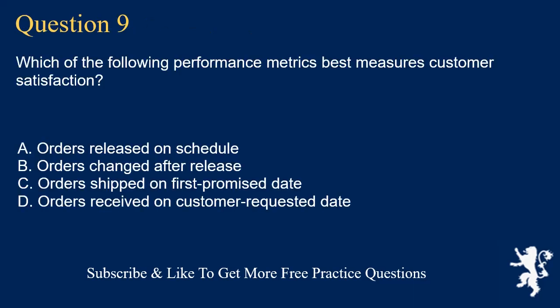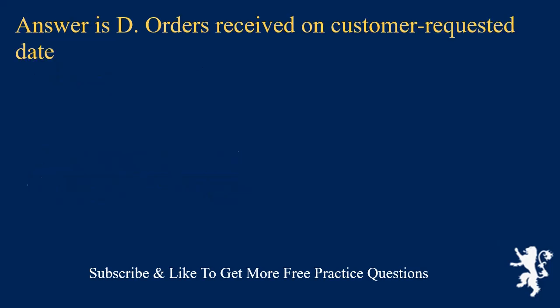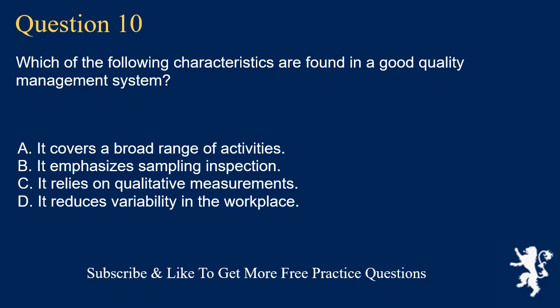Question 9. Which of the following performance metrics best measures customer satisfaction? A. Orders released on schedule. B. Orders changed after release. C. Orders shipped on first promise date. D. Orders received on customer requested date. Answer is D. Orders received on customer requested date.